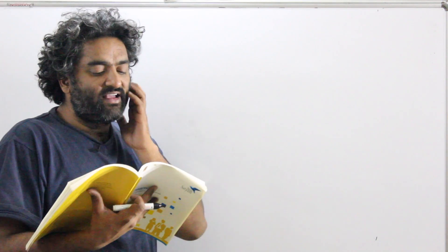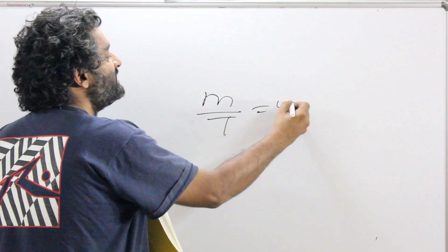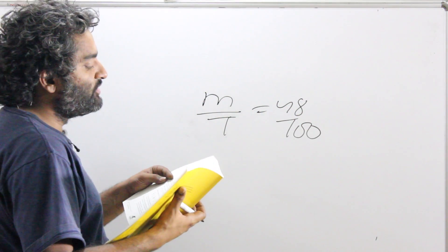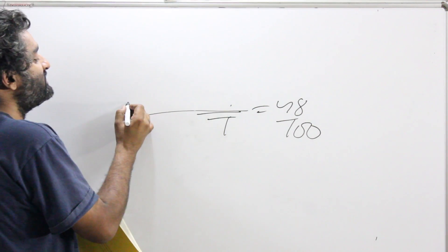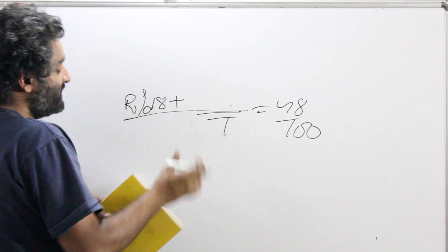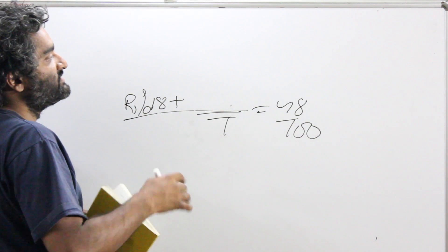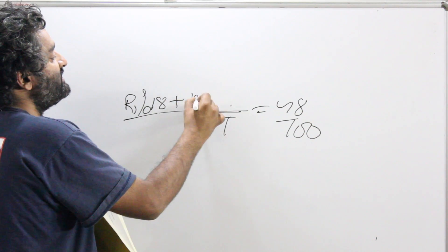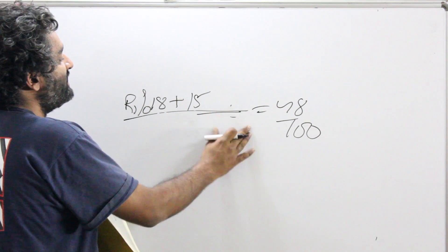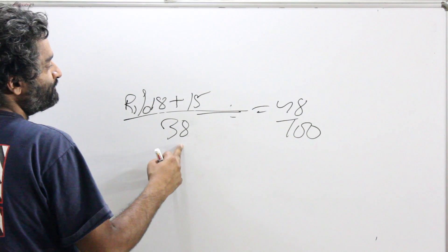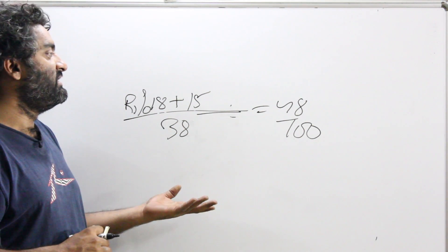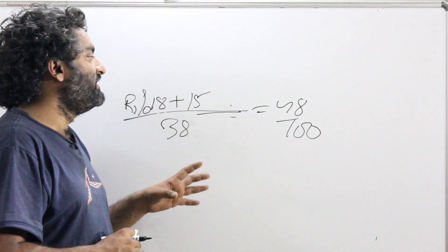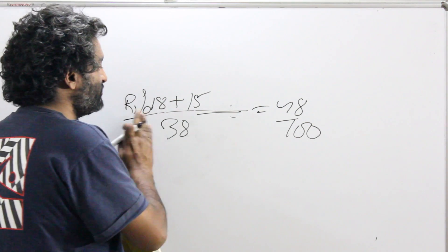Using standard mathematics: the resultant mixture has 48% milk, so milk by total is 48 by 100. When 18 liters of milk-and-water solution is mixed with 20 liters at 75%, the milk in the second solution is 75% of 20, which is 15 liters. So R1 percent of 18 plus 15, divided by the total quantity of 38, equals 48 over 100. Solve that equation to get R1. For those who prefer standard equations, this approach is straightforward, but you still need to understand the story in detail.